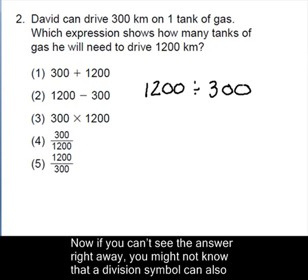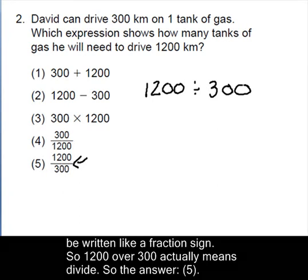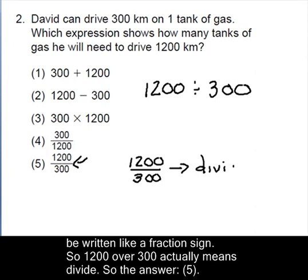Now, if you can't see the answer right away, you might not know that a division symbol can also be written like a fraction sign. So, 1,200 over 300 actually means divide. So, we have answer 5.